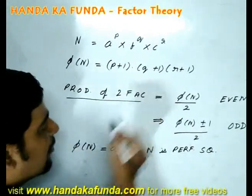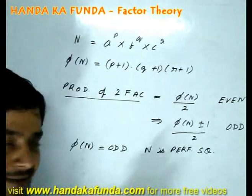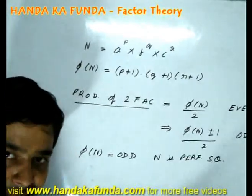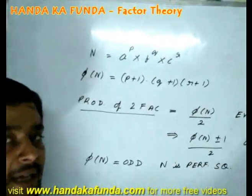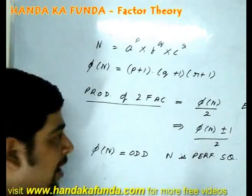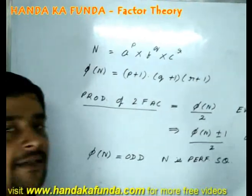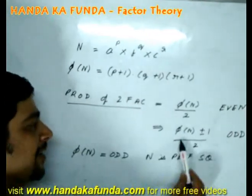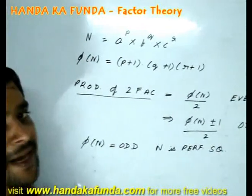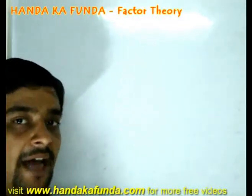So you will need to look at the question very carefully. If the question says product of 2 factors then it will be phi n plus 1 by 2. For example, 16 can be expressed as 4 into 4. However, if it says that in how many ways can 16 be expressed as a product of 2 distinct factors, then it will be phi n minus 1 by 2. Because 4 into 4 will become invalid in that case.